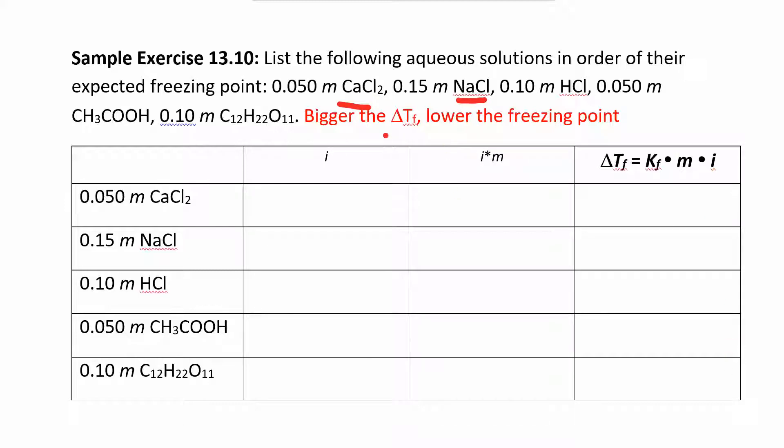And then you can calculate the delta Tf. Now, the bigger the delta T, the lower the freezing point, right? Because the freezing point is always going to go down. So if you have a big change from zero, then you're going to have a much lower freezing point. So that's kind of what we're going to look at in this column.